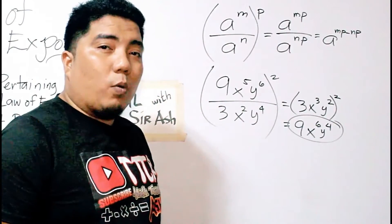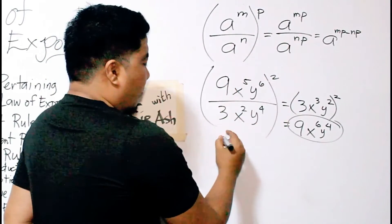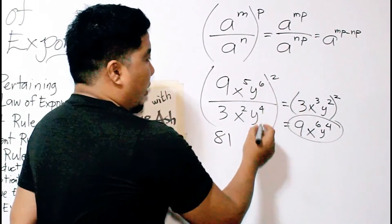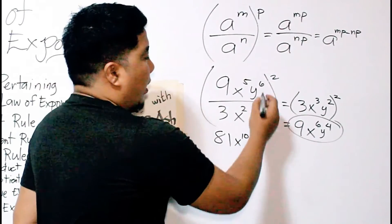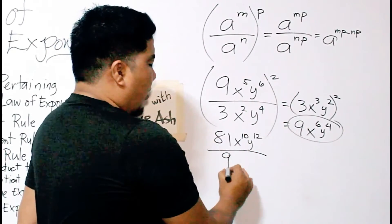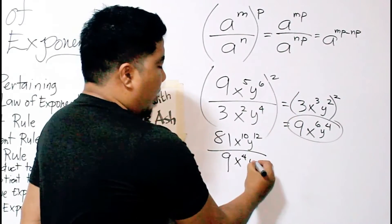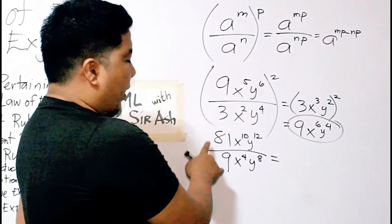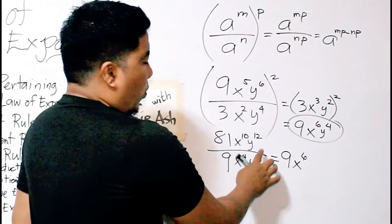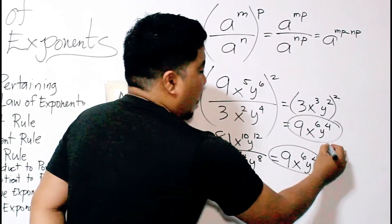Method 2 for the same example — apply the power rule first: 9 squared = 81, x to the 5th to the 2nd = x to the 10th, y to the 6th to the 2nd = y to the 12th in the numerator; 3 squared = 9, x squared to the 2nd = x to the 4th, y to the 4th to the 2nd = y to the 8th in the denominator. Then simplify: 81 ÷ 9 = 9; x to the 10th ÷ x to the 4th = x to the 6th; y to the 12th ÷ y to the 8th = y to the 4th. Same final answer: 9x to the 6th y to the 4th.